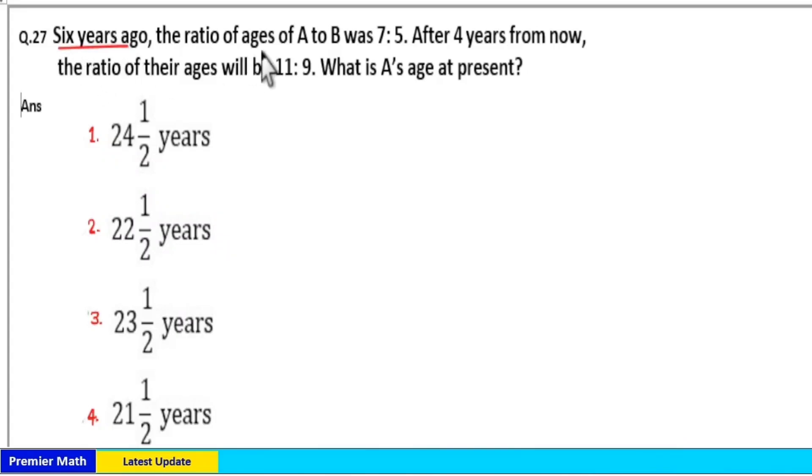Six years ago, the ratio of ages of A to B was 7 to 5. After 4 years from now, the ratio of their ages will be 11 to 9. What is A's age at present?